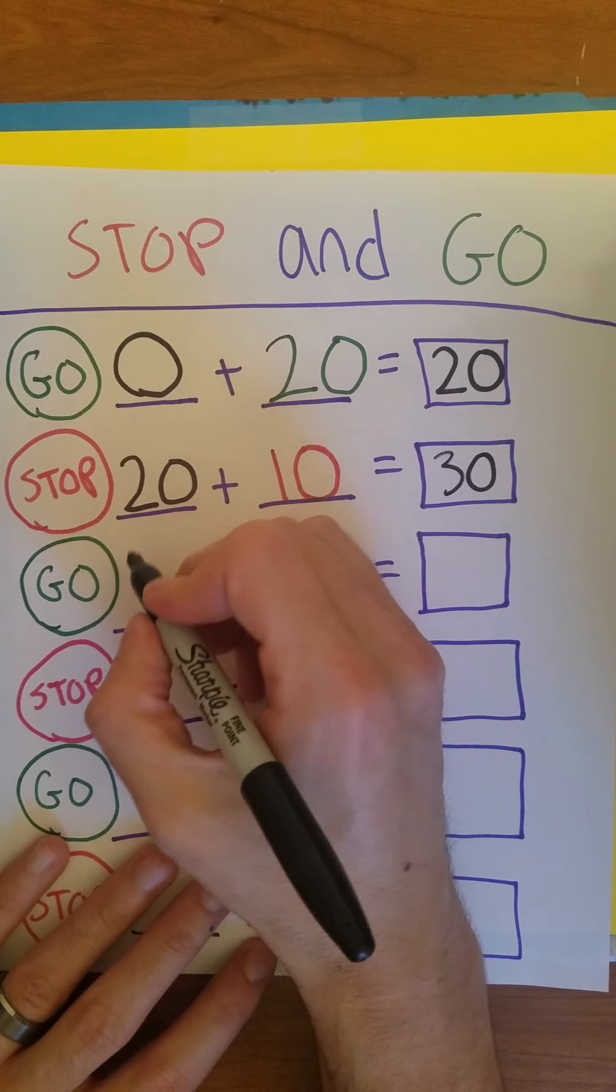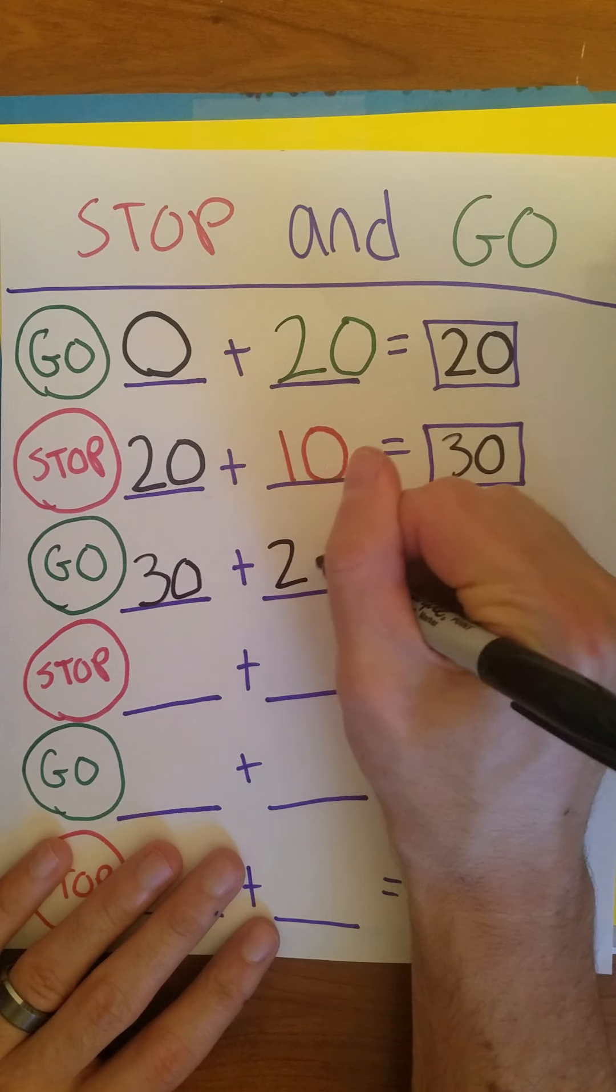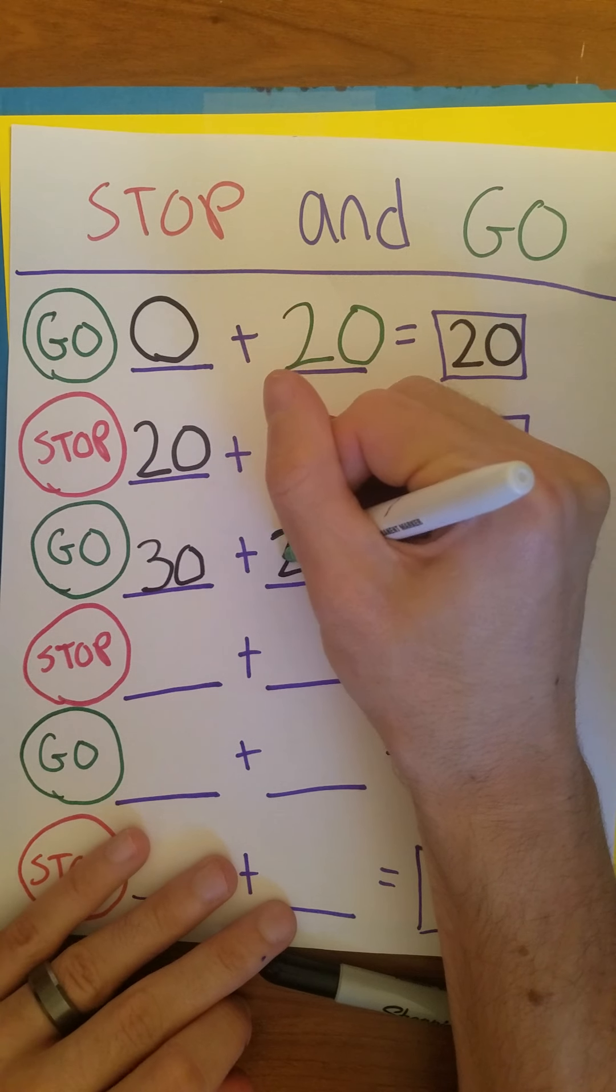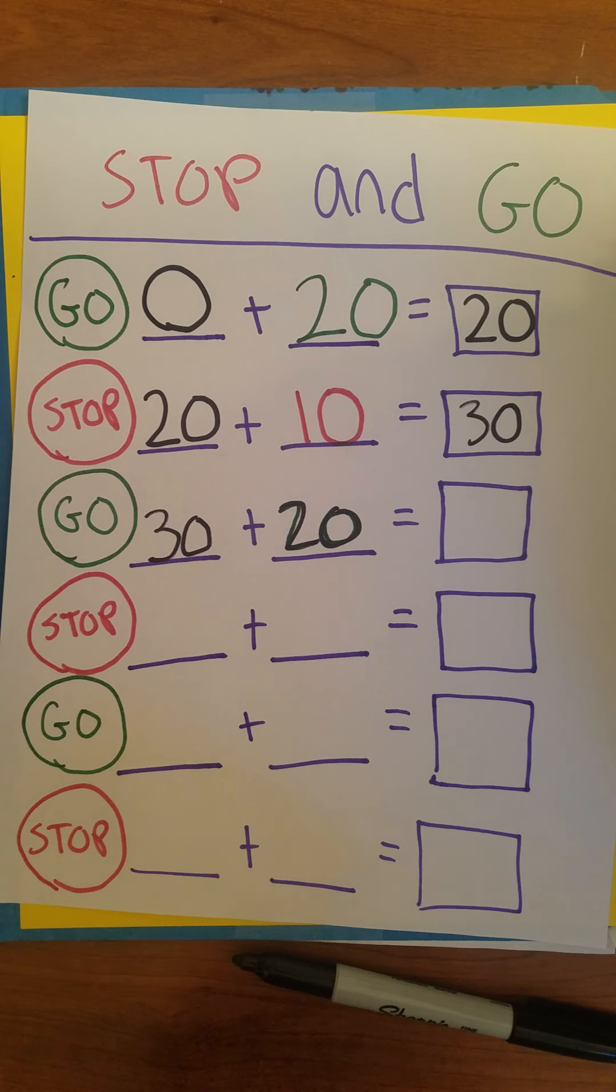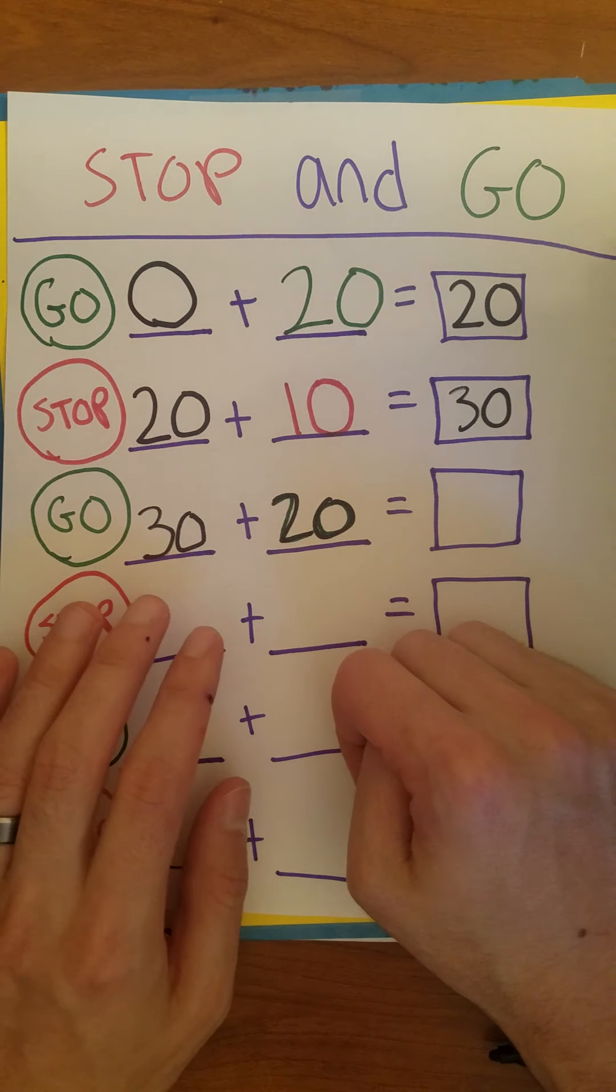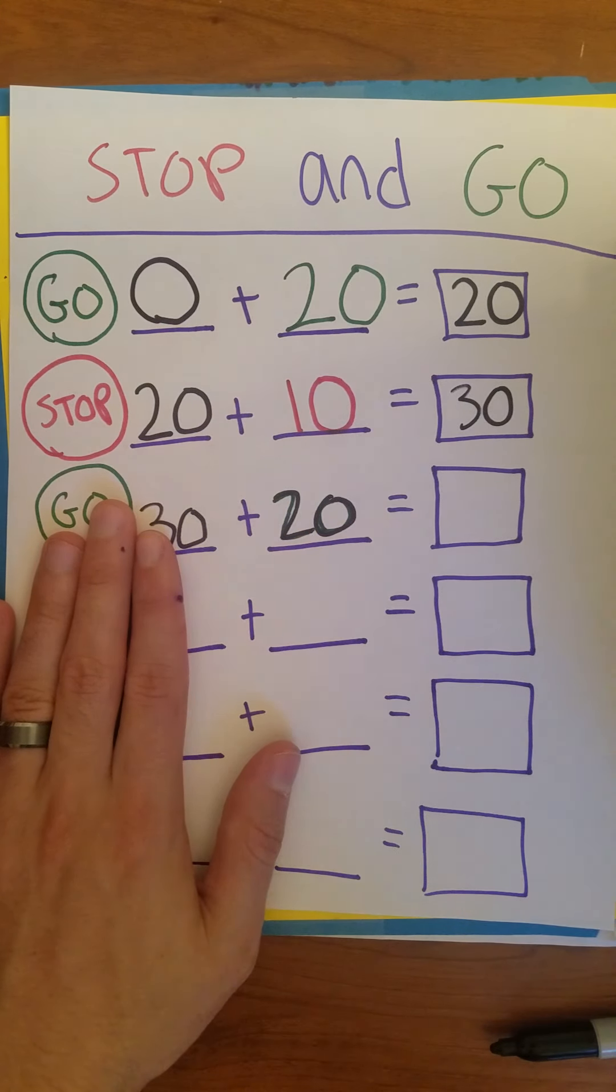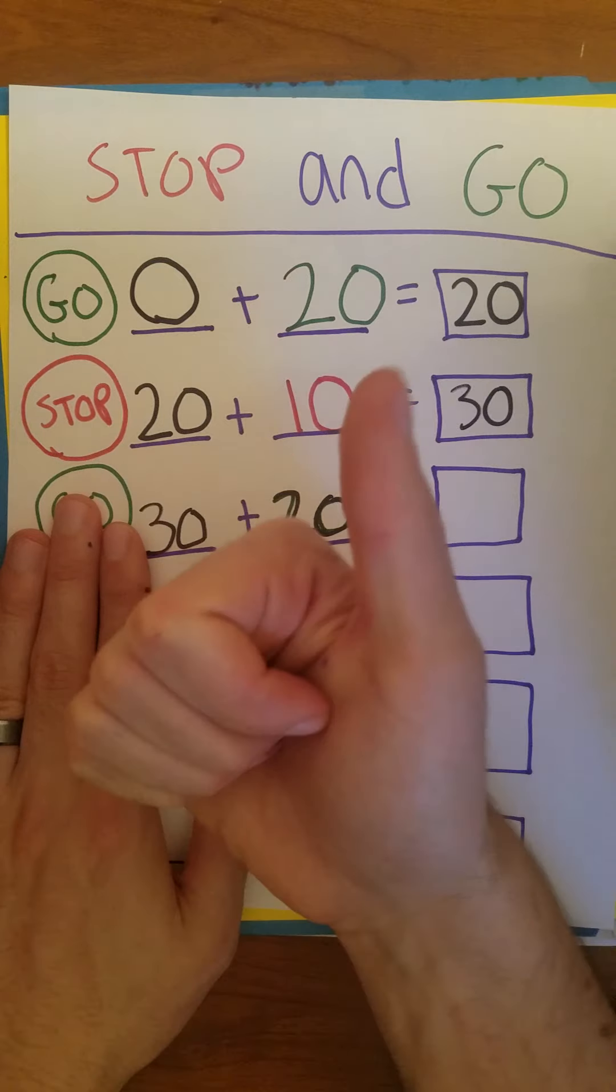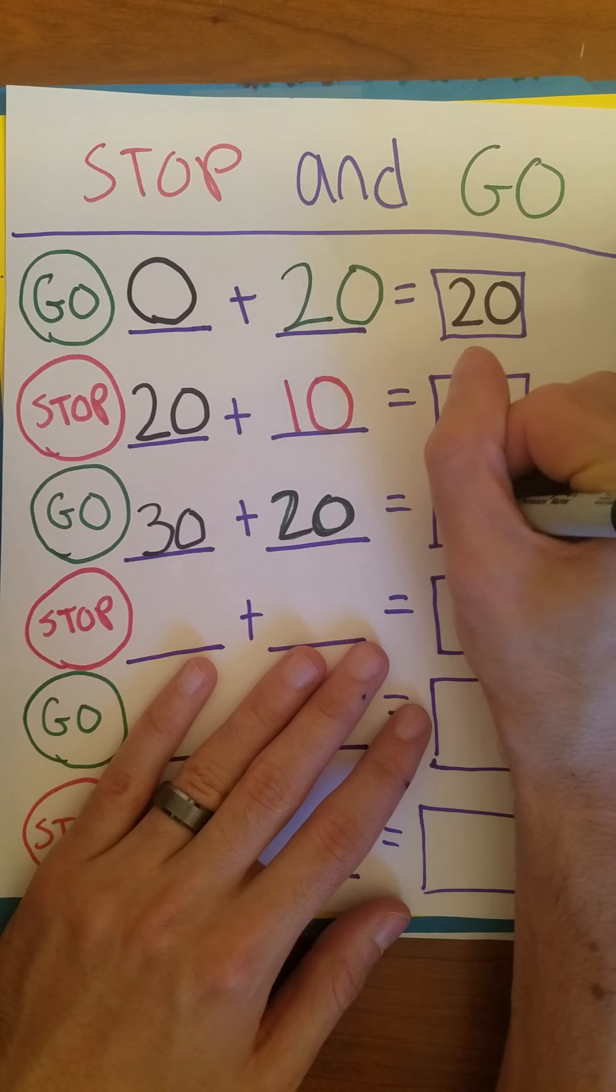Right now we're still going 30 miles an hour on the next one. Now we have a go sign so we get to add 20. We now have our number sentence. I wanted that to be green. And then we now have the number sentence 30 plus 20. So I'm going to do the same thing. I'm going to count 10 twice. 10, 20, 30, 40, 50. So 30 plus 20 equals 50.